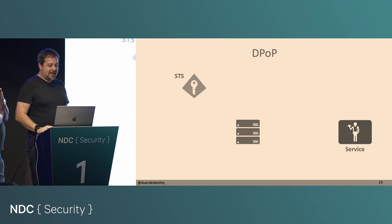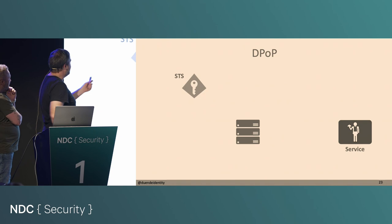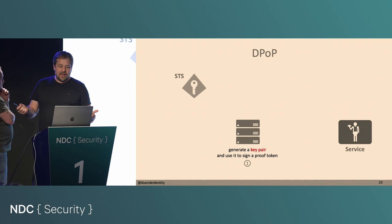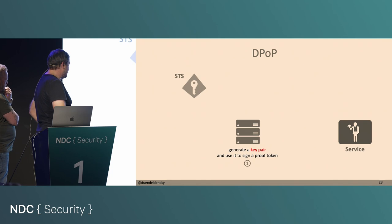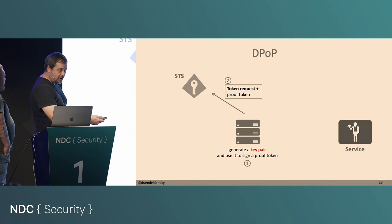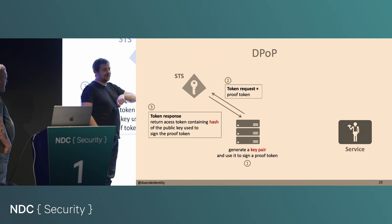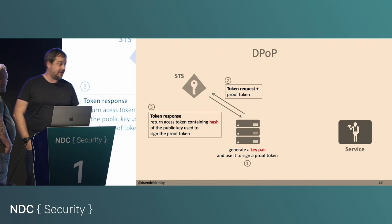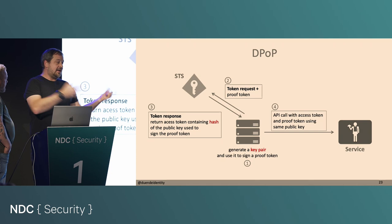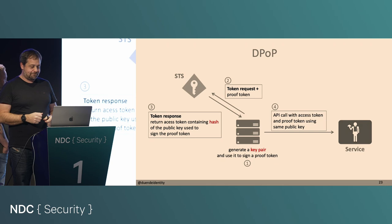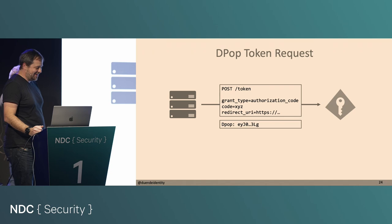For most parts of my career I got away with just three icons: the client, the token server, and the API. Same idea here — the client generates a key, then signs something called a proof token. You do a token request, send a proof token along, and the STS replies with an access token. The proof token is signed, so the hash of the public key goes into the access token. Then when you call the API, you send along the access token, create a new proof token using the same key pair, and the API has both artifacts and compares the hashes. If they match, that's good.